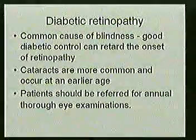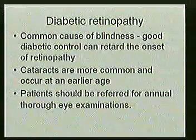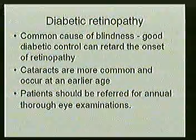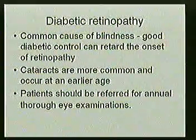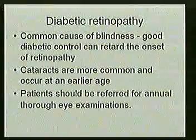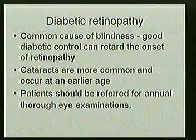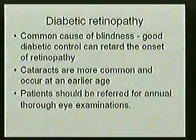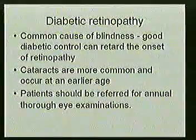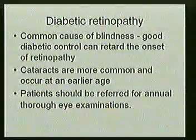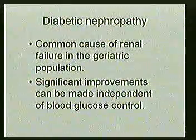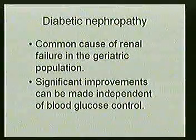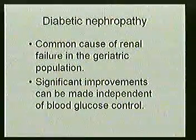Diabetic retinopathy is an important microvascular complication and a common cause of blindness. Good glycemic control can retard the onset of retinopathy. Cataract associated with diabetes is very common and occurs at an early age — premature cataract is a feature of diabetes. Patients should be referred every year for a thorough eye examination. Diabetic nephropathy is the common cause of renal failure in the geriatric population. Once diabetic nephropathy develops, tight blood glucose control may not achieve much in terms of renal failure outcome.